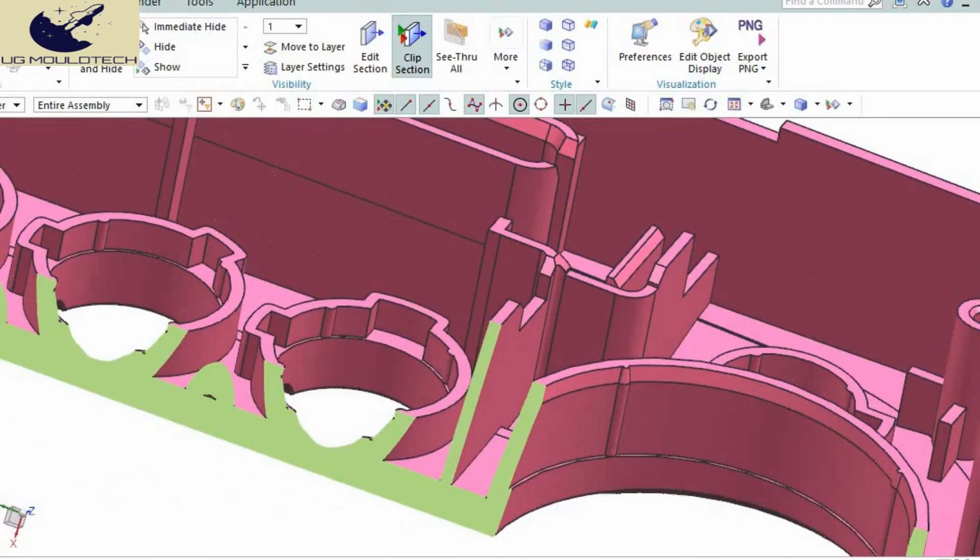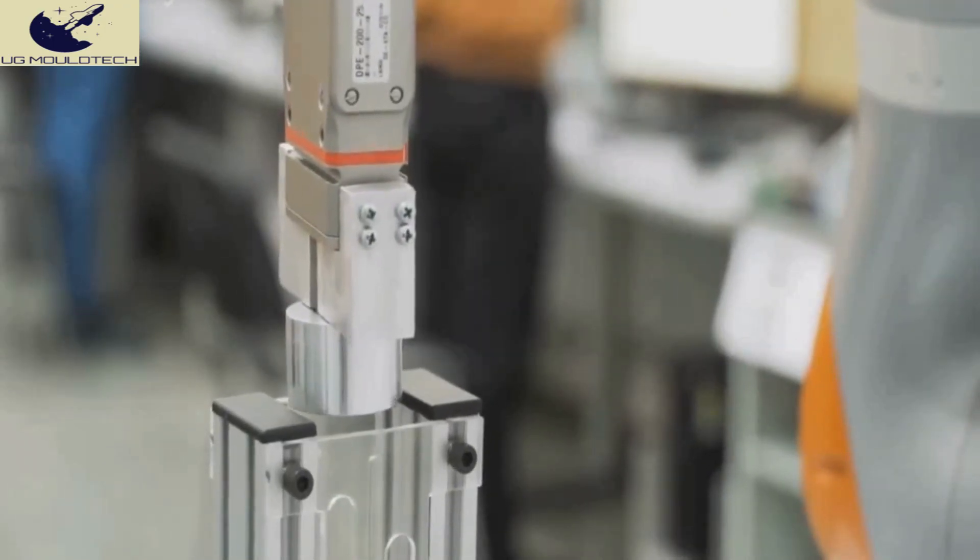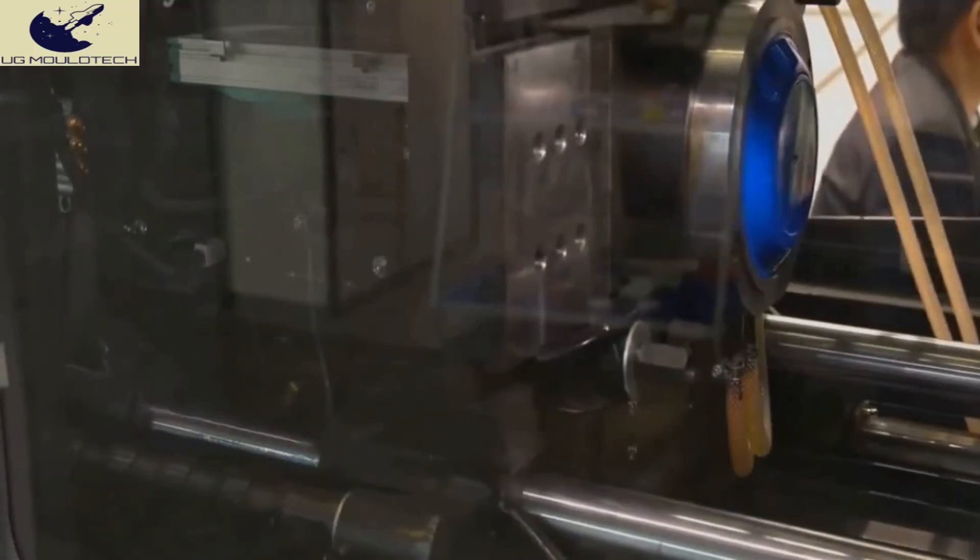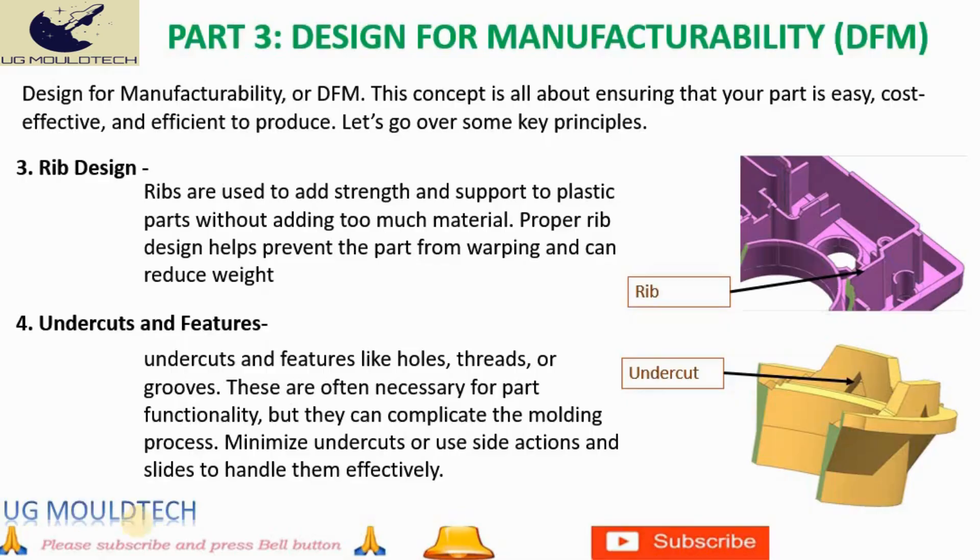Let's dive into undercuts and features like holes, threads, or grooves. These elements are crucial for the functionality of plastic parts, but they introduce complexities in the molding process. To tackle these challenges, minimize undercuts or incorporate side actions and slides to manage them efficiently.